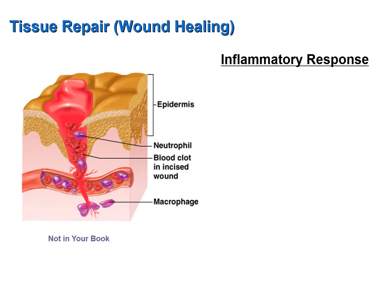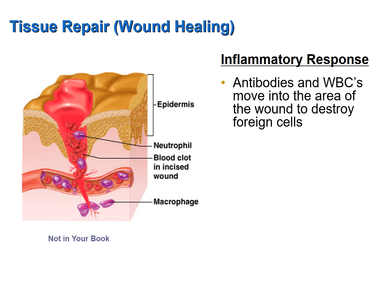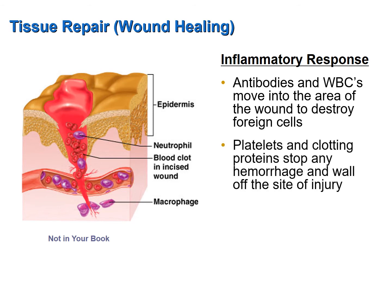Those nearby capillaries become leaky, allowing antibodies in the blood to move into the area of injury to destroy any foreign cells like bacteria or viruses that have entered through the wound. White blood cells also move out of those capillaries into the area of injury to destroy foreign cells. Platelets and clotting proteins move into the area as well, clotting the blood to prevent further hemorrhage from severed blood vessels, and walling off the site so microorganisms won't spread to adjacent tissues.